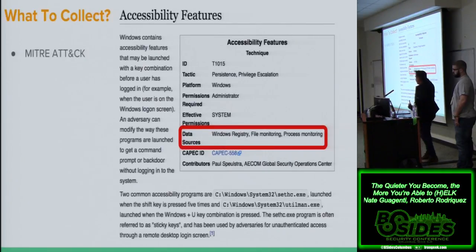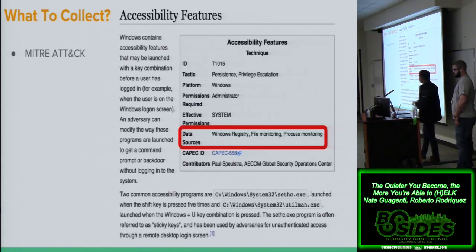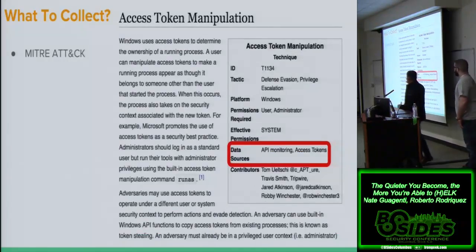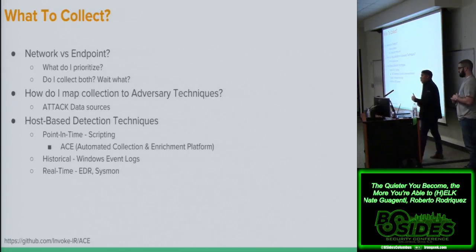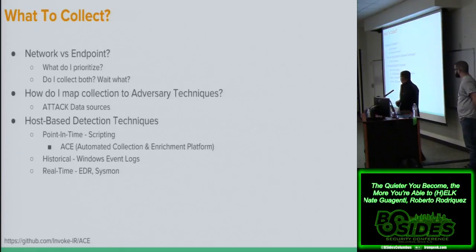In a red team report, they might say you need accessibility features turned on or some type of logging to gather that data. Blue team might say after research they believe they can't catch that stuff. So you have different teams talking about the same framework. One good thing to do is look at the data sources part of every MITRE technique — things like file monitoring, process monitoring, Windows registry keys, API monitoring, and access tokens.